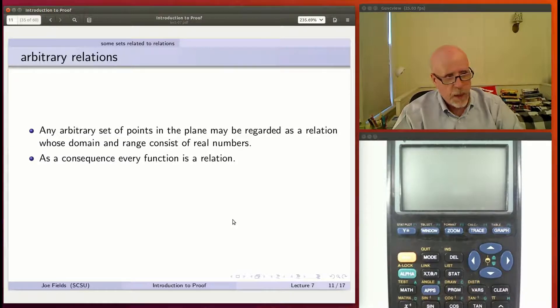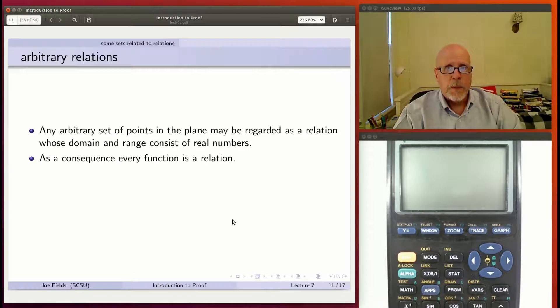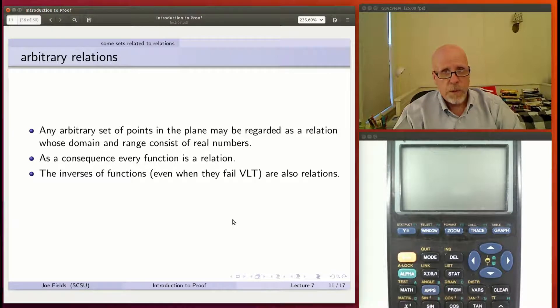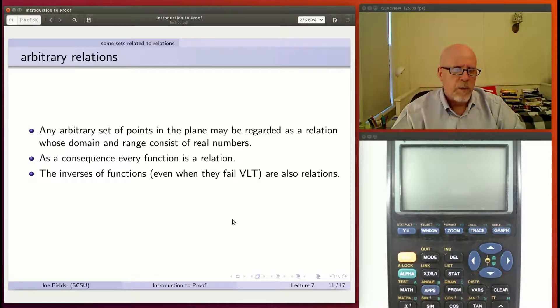One quick consequence of that is every function is a relation. I like to always remember the example of all squares are rectangles, but not all rectangles are squares, right? We're dealing with a similar thing. All functions are relations, but not all relations are functions. In fact, a function is a very special type of relation. It's a relation that passes the vertical line test. Often, we look at the inverses, inverse of a function. That's got by just sort of flipping the graph around the line y equals x. Even when those things fail the vertical line test, which happens, those are relations.